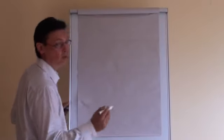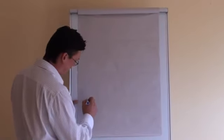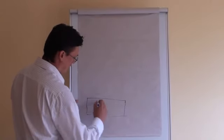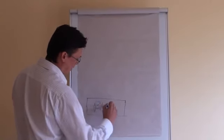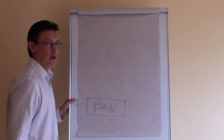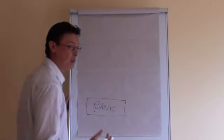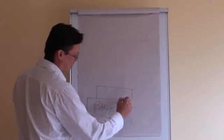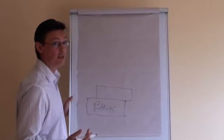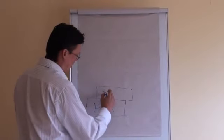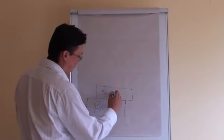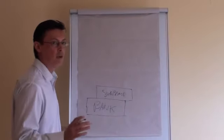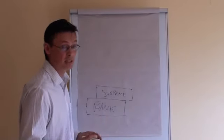Basically how it all started was you had banks and the banks were a bit innovative, maybe over innovative you might say, and they created financial products which they called subprime. And why was it subprime? Because they were lending it at very low rates to people who basically couldn't afford it.